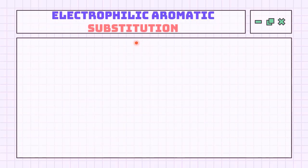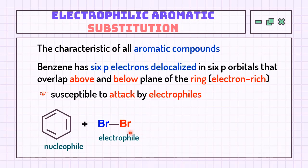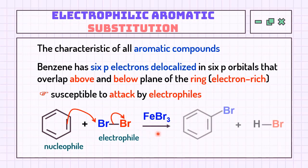Electrophilic aromatic substitution is a reaction in which an atom attached to an aromatic ring — usually hydrogen — is replaced by an electrophile. For example, benzene as an electron-rich species has its nucleophilic site on the pi system and will attack the electrophilic site on Br₂ with the help of a catalyst to form substituted benzene, where the hydrogen has been replaced by an electrophile.